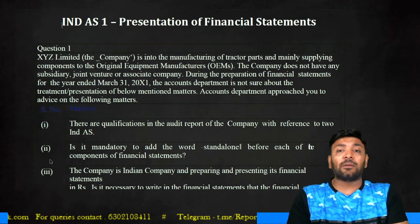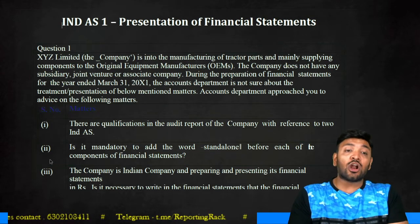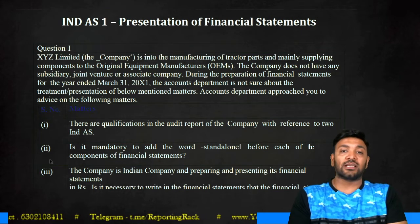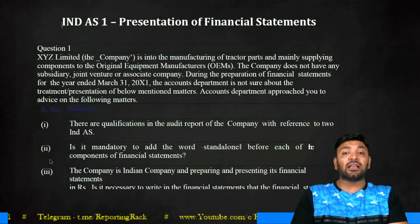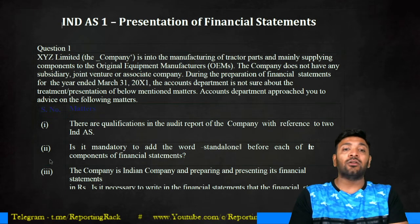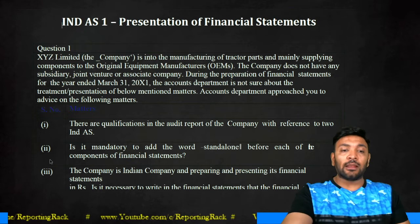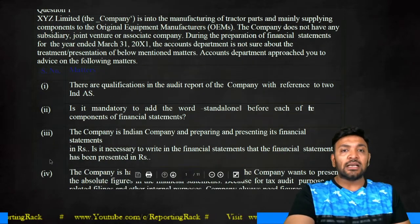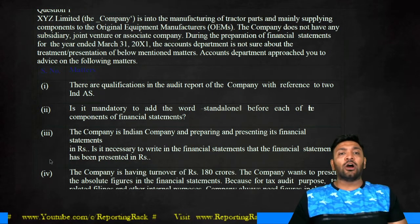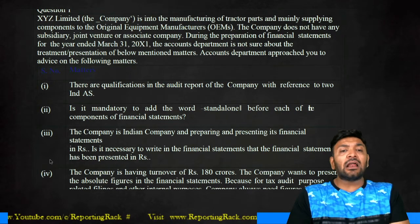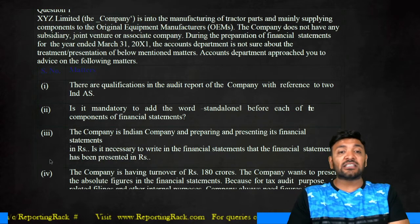The first question: XYZ is into manufacturing of tractor parts and mainly supplying components to the original equipment manufacturer. The company does not have any subsidiary, joint venture, or associate. During the preparation of financial statements for the year ended 31st March, the accounts department is not sure about the treatment and presentation of the below-mentioned matters. There are qualifications in the audit report with reference to two IND AS.